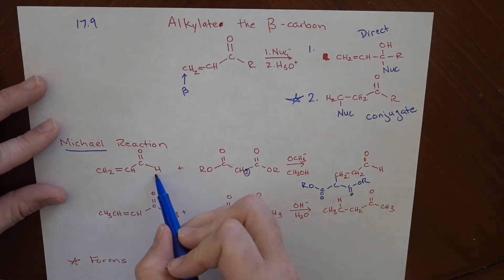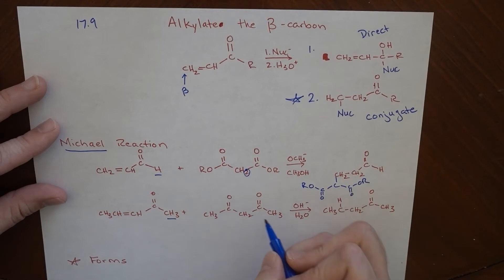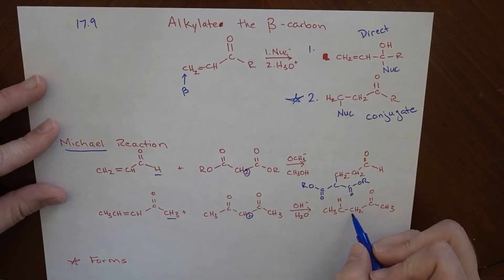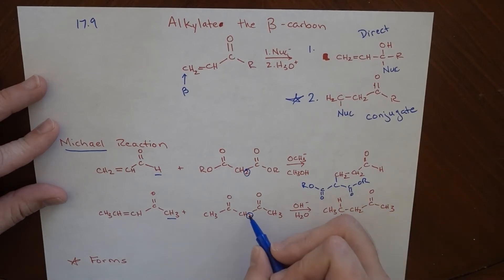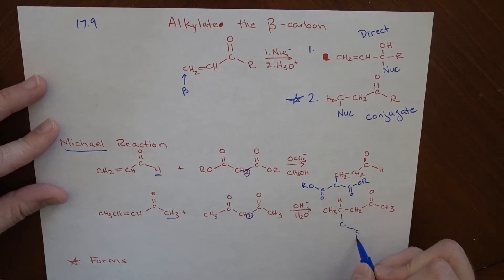Now here, if we had this as a ketone, or this is a CH3, the same sort of thing happens. This base can remove this proton here, and we end up attaching it here at this beta carbon. So this C is this C, it's attached to a carbonyl and another carbonyl.